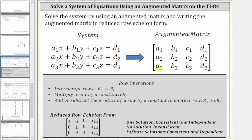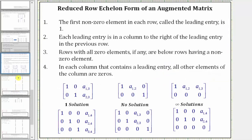Because we have a three by four augmented matrix, the reduced row echelon form will be one of three forms: if we have a main diagonal of ones, we have one solution; if we have a row of zero, zero, zero, one, we have no solution; and if we have an entire row of zeros, we have infinite solutions.